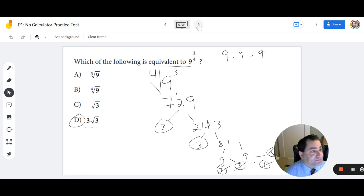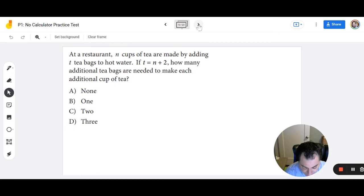Number 13. At a restaurant, n cups of tea are made by adding t tea bags to hot water. If t equals n plus 2, how many additional tea bags are needed to make each additional cup of tea? Well, each is the key word, because this is a rate, this is slope. So again, an understanding of y equals mx plus b will bring us right to the answer. It's the slope. What is the slope? The slope is 1.